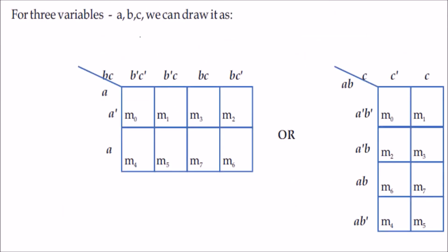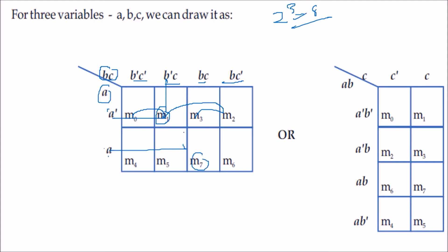For 3 variables, there are 8 boxes. Place A on one axis and BC on the other, with columns labeled B-dash C-dash, B-dash C, BC, BC-dash. This gives M0, M1, M2, M3 for A-dash row and M4, M5, M6, M7 for A row. For 4 variables, 2 to the power 4 gives 16 boxes arranged in 4 rows and 4 columns, with AB on one axis and CD on the other.